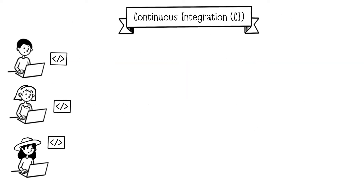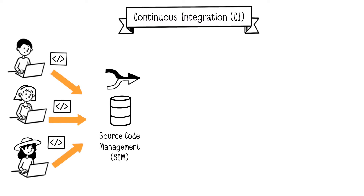Let's start with Continuous Integration. Modern applications are divided into small, independent services known as microservices. Each developer works on different parts of an application simultaneously. However, when a developer makes changes to an application, these changes can conflict with modifications made at the same time by other developers.